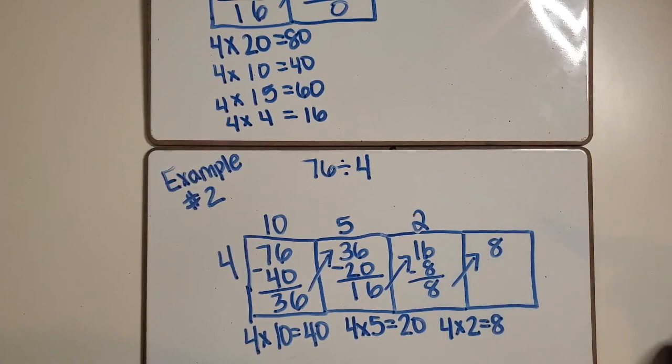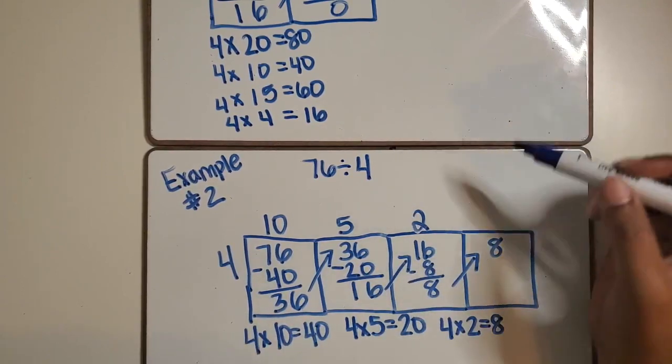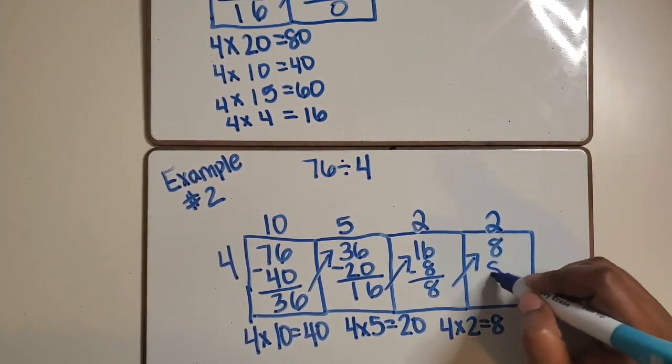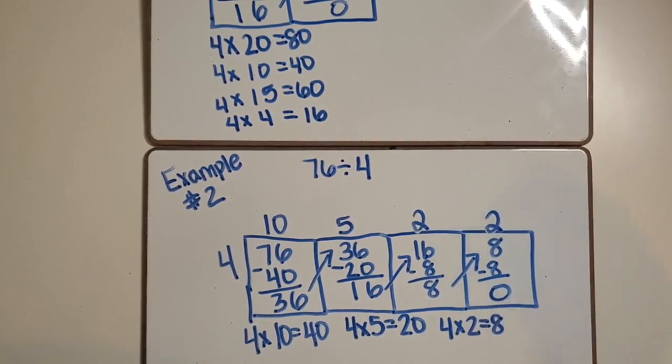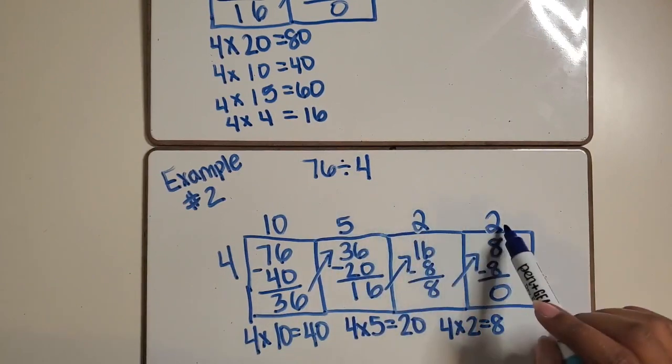We need to extend our rectangle again and begin with the 8 as the total. We can use that same equation, 4 times 2 equals 8, subtract the 8 from 8 and then have 0 remaining.